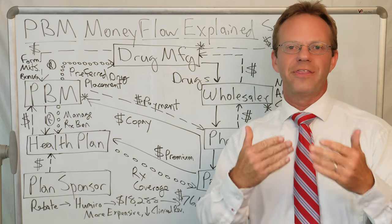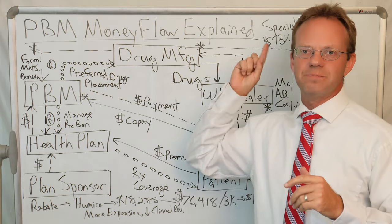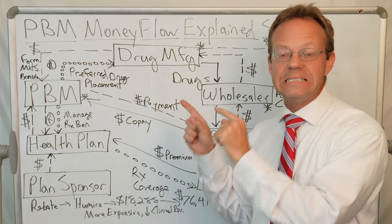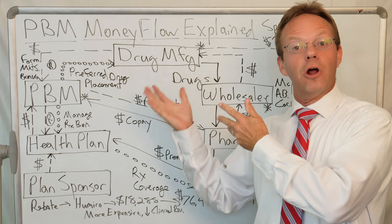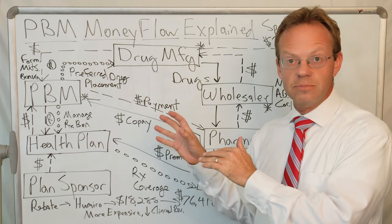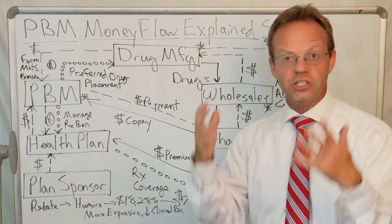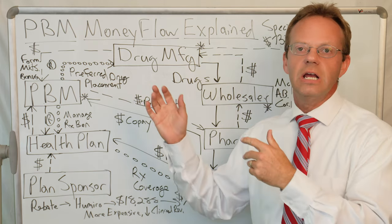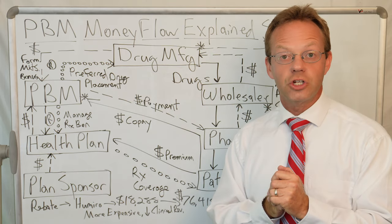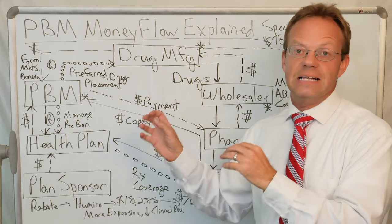Hello, this is Dr. Eric Bricker, and thank you for watching A Healthcare Z. Today's topic is PBM Money Flow Explained. We're going to go through this incredibly confusing chart in detail. However, I would argue this is actually the most straightforward chart I have seen of the PBM Money Flow. It comes from a physician who practices in North Carolina, and he published it in the Journal of Clinical Oncology around specifically practice management. I'll leave a link in the show notes. It's a fantastic graphic.